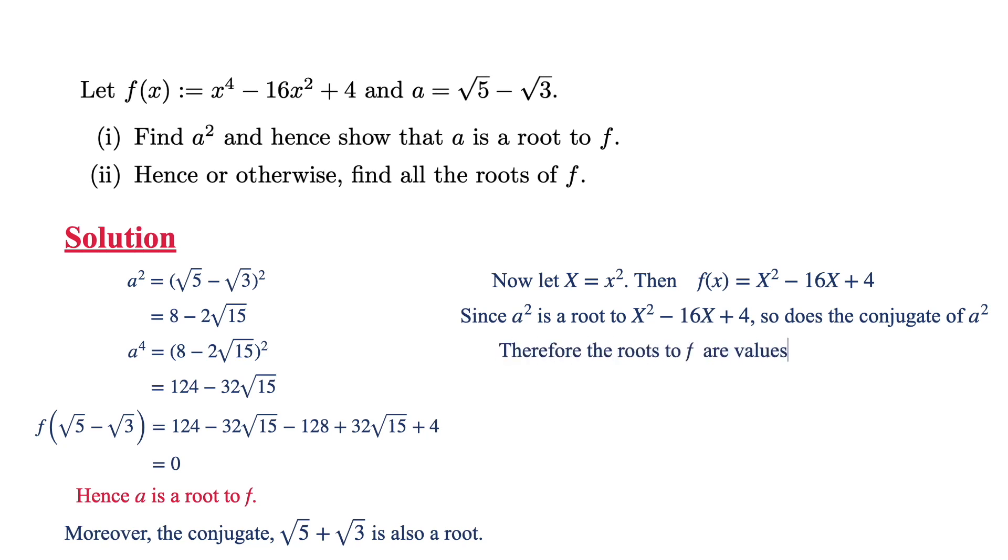Therefore, the roots to f are the values of x such that x squared equals a squared or x squared equals the conjugate of a squared, which is 8 plus 2 square root 15. The former option yields plus or minus a and the latter expression yields plus or minus square root 5 plus square root 3.